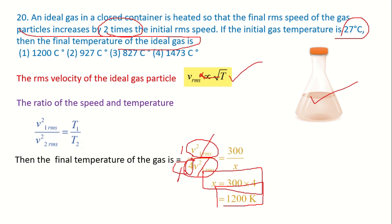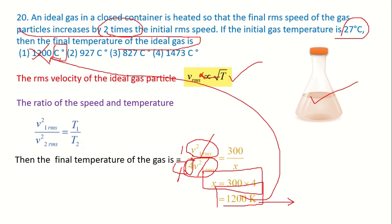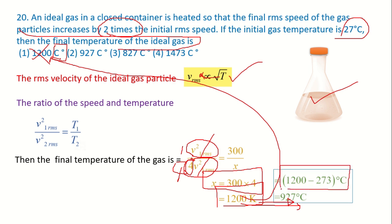Be careful with units. The answer 1200 K is in Kelvin, but the options may be in Celsius, so you must convert: 1200 − 273 = 927 degrees Celsius. Always convert temperature to Kelvin before solving and then convert back if required.